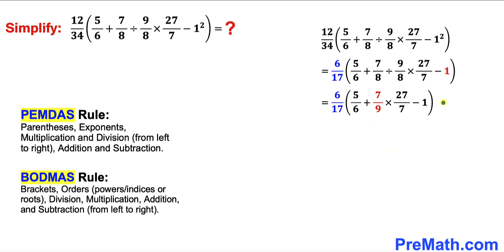As you can see in this next step I have replaced this part by 7 divided by 9 and the rest is the same. Now next comes the multiplication so we are going to focus on these two fractions. We can see that this 7 and 7 is gone and 9 goes into 27 three times, so this whole thing has been simplified to 3.